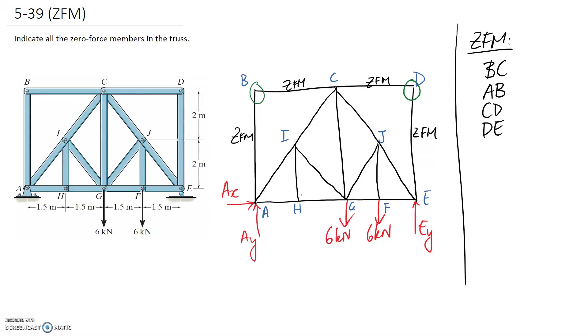So I think an instance where that one is applicable is at node H down the bottom here. You can see we have two members which are in a straight line. And this third one is subsequently going to be zero force, simply because again, there's no externally applied forces there. So this is a zero force member. So that is HI.